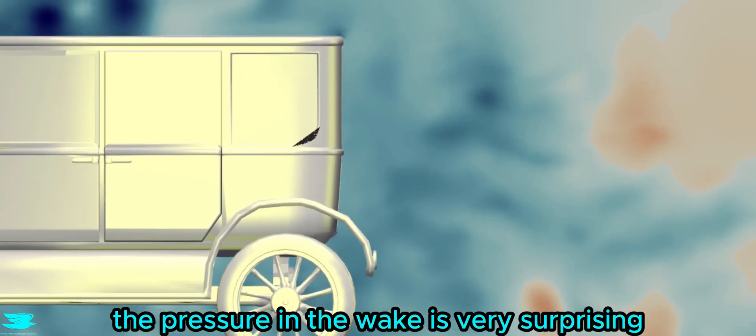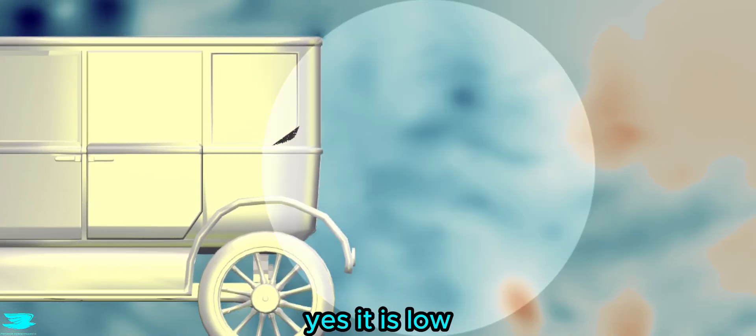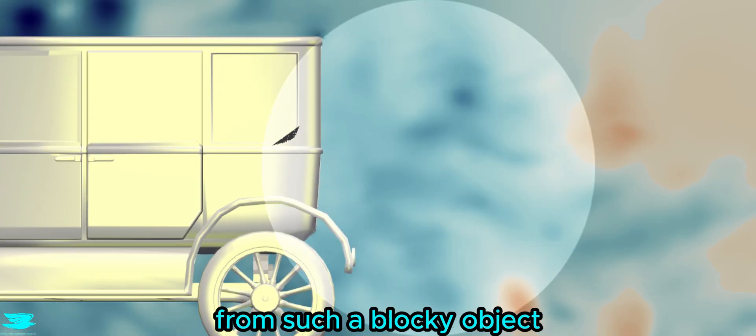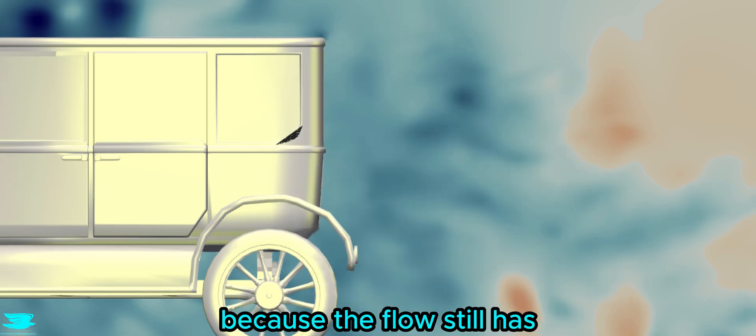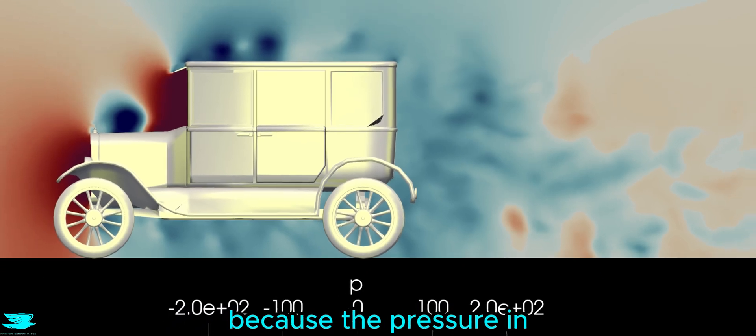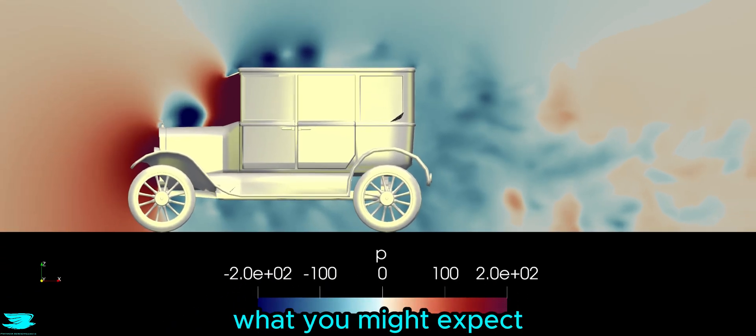But for me, the pressure in the wake is very surprising. Yes, it is low, but not nearly as low as you might expect from such a blocky object, and that is mainly because the flow still has some energy back there. So the Model T has a lower drag because the pressure in the wake is higher than what you might expect.